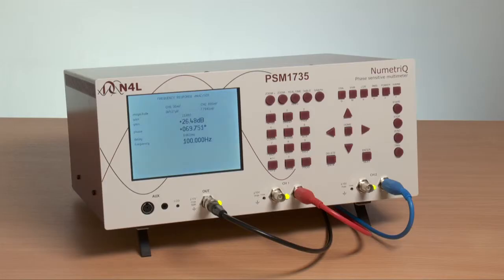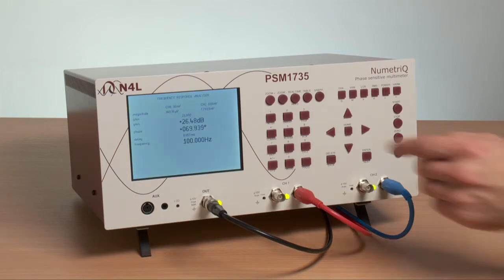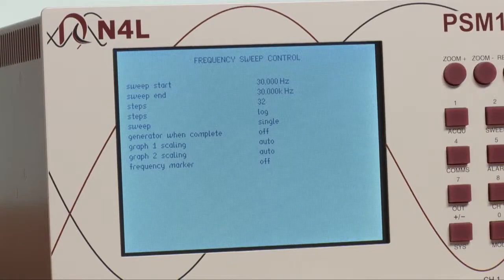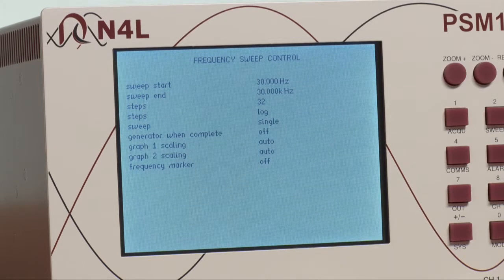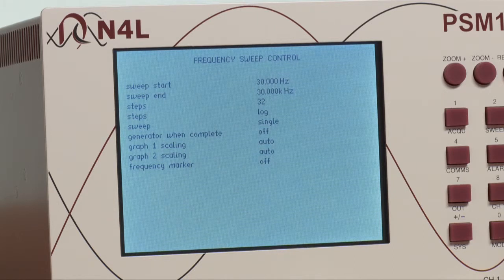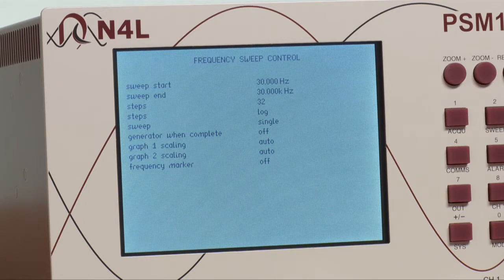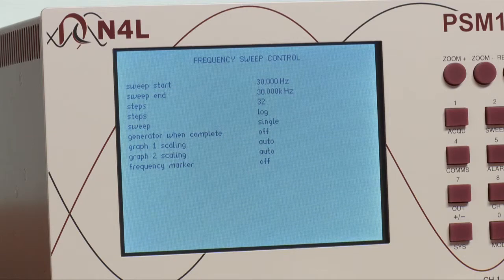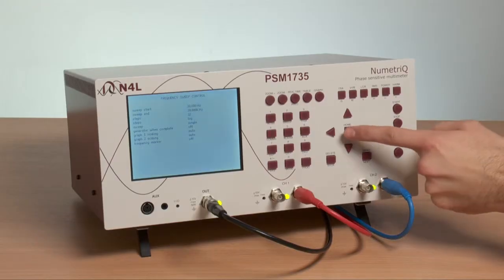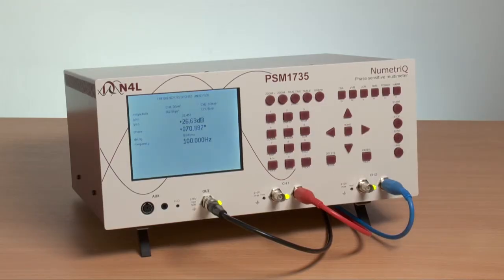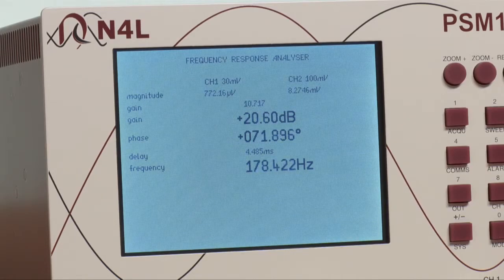Normally, however, loop response measurements are made over a frequency sweep. So we will go into a sweep menu, where we have preset a frequency range of 30 Hz to 30 kHz. This range can be set to any frequency range from 10 microhertz to 1 MHz in the PSM 1700, or 10 microhertz to 35 MHz in the PSM 1735. We have selected 32 steps for the sweep, log plot, and a single sweep. If we now come back to the measurement mode and press start, you can see that the frequency is stepping up and the values of gain and phase are changing.